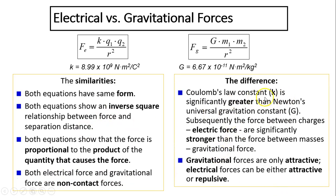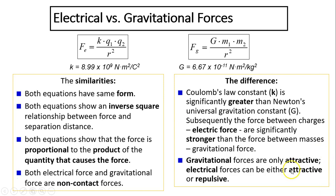What's the difference? Coulomb's Law constant K is significantly greater than Newton's universal gravitational constant G. K is about 10 to the 9, G is about 10 to the negative 11 — so K is 10 to the 20 times bigger. Therefore, electric force is significantly stronger than gravitational force. Also, gravitational force is only attractive, but electric force can be attractive or repulsive — attractive when charges are opposite, repulsive when charges are the same. Since mass doesn't have positive or negative, gravitational force is always attractive.